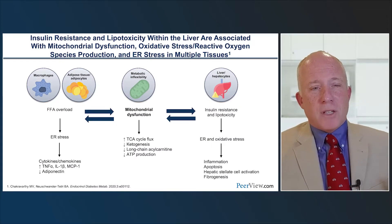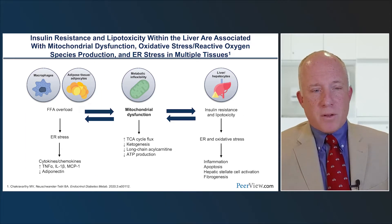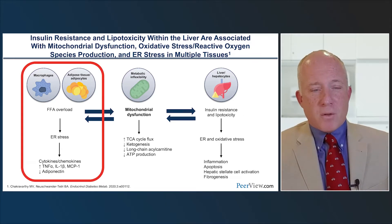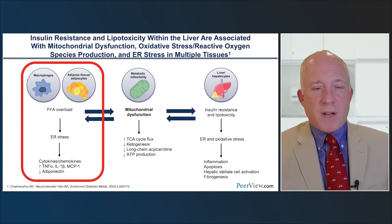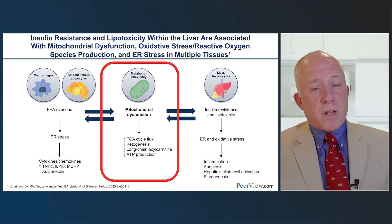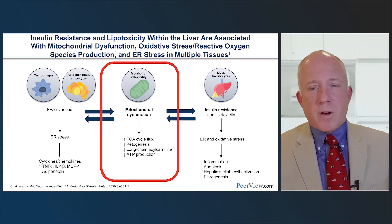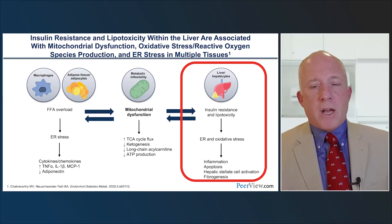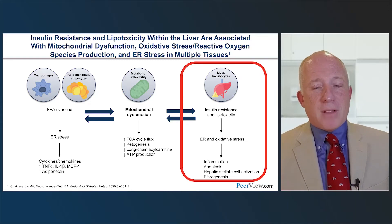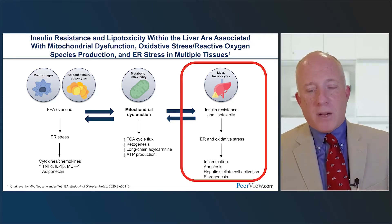Patients at risk may have insulin resistance leading to free fatty acid overload. That causes organ stress and an increase in inflammatory cytokines, resulting in mitochondrial dysfunction. Ultimately you see organ damage — increased insulin resistance and lipotoxicity — which feeds back into the inflammatory system, creating a cycle that compounds on itself.